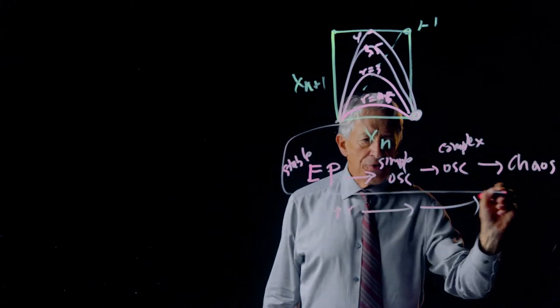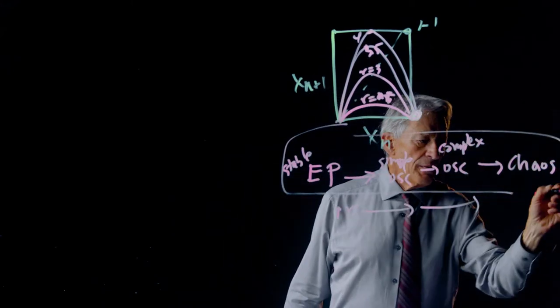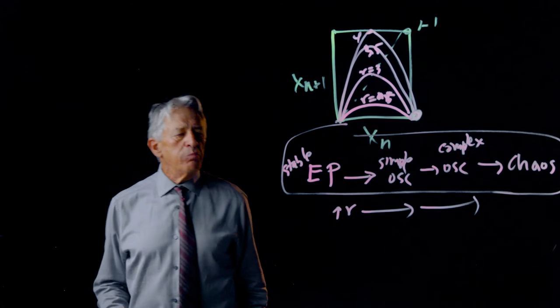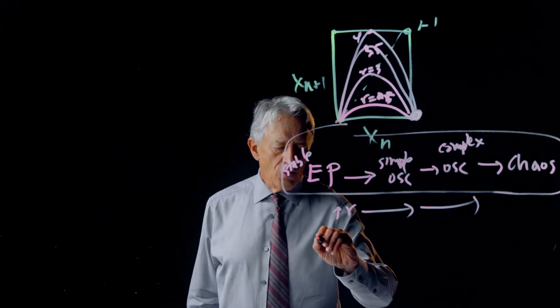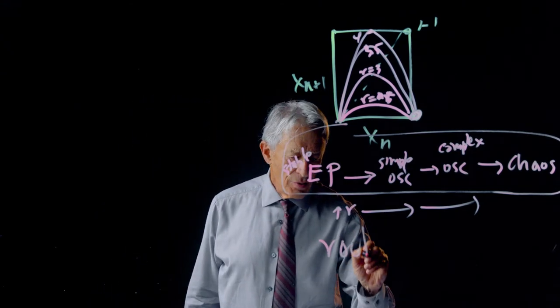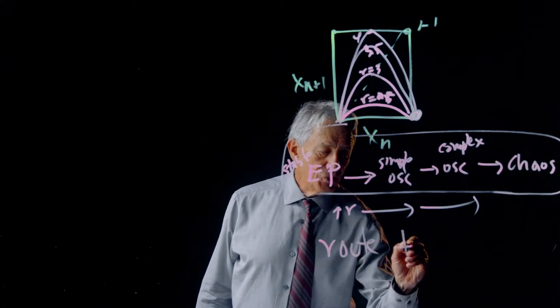And this is interesting, because it is an example of what is called a route to chaos.